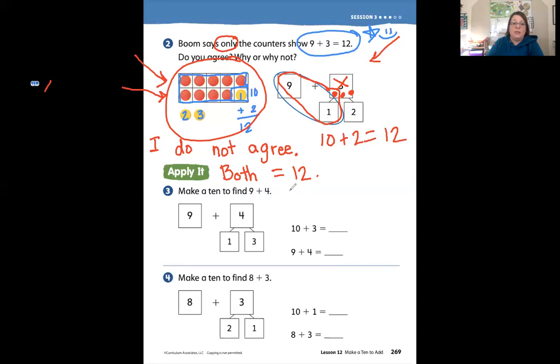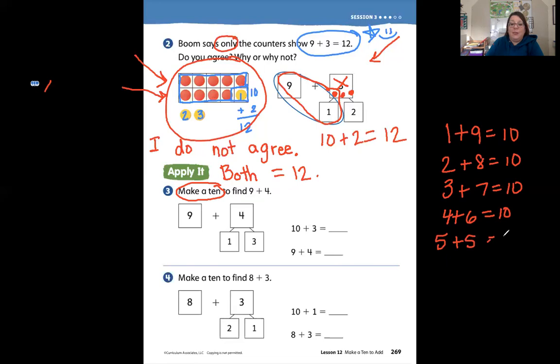All right, moving on to number three. It says make a ten to find nine plus four. Making a ten is key, okay? One plus nine equals ten. Two plus eight equals ten. Three plus seven equals ten. Four plus six equals ten. Five plus five equals ten. Six plus four equals ten. Seven plus three equals ten. Eight plus two equals ten. And nine plus one equals ten. We need to practice those tens big time.